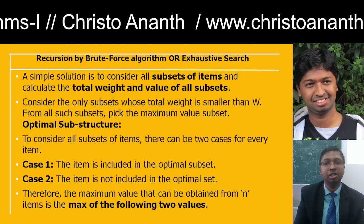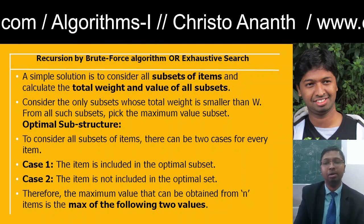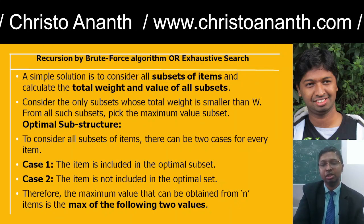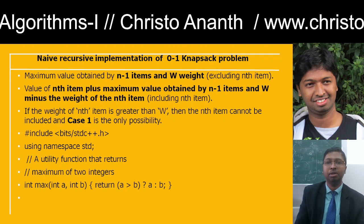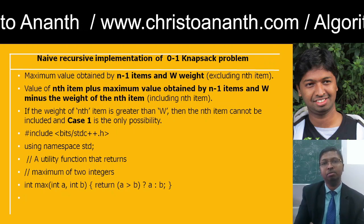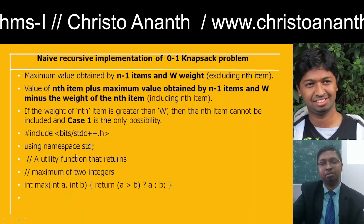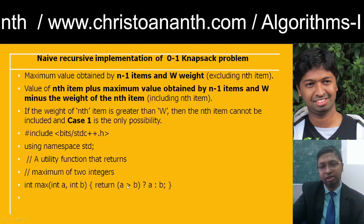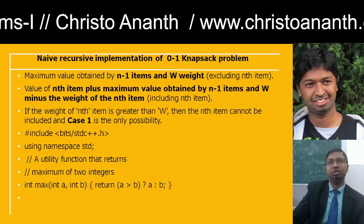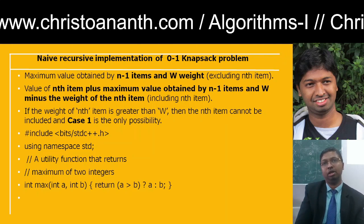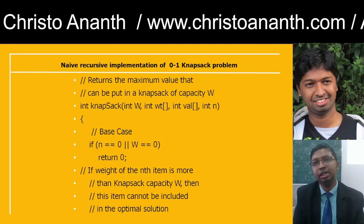This is the optimal substructure: consider all subsets of items. Either the item is included in the optimal subset or it is not. We find the maximum of the two values. The maximum value obtained by n−1 items with capacity W, versus the value of the nth item plus the maximum value obtained by n−1 items with capacity W − weight[n−1]. We use a utility function returning the maximum of two integers: int max(int a, int b), returning a > b ? a : b. The knapsack function returns the maximum value that fits within capacity W.